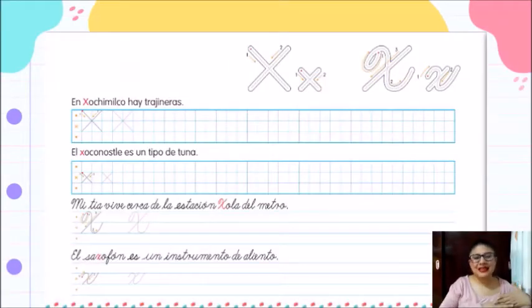Lo siguiente que vamos a hacer es buscar en nuestro libro de trazos y piruetas la página número 88. En ella vamos a encontrar esta actividad. Lo que vamos a hacer es muy fácil. Primero, en el aire, vamos a realizar el trazo de la letra X, tanto en letra script como en letra cursiva. Lo vamos a hacer tanto con las letras mayúsculas como con las letras minúsculas.